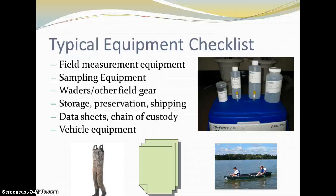A typical equipment checklist includes field measurement equipment, specialized sampling equipment, field gear such as waders and bug suits, materials needed for sample storage, preservation, and shipping, data sheets, chain of custody documents, and transportation. For example, if you were sampling from a boat, you would include life vests, an integrated sampler, an anchor, a GPS unit, navigation charts, and oars, among other equipment.